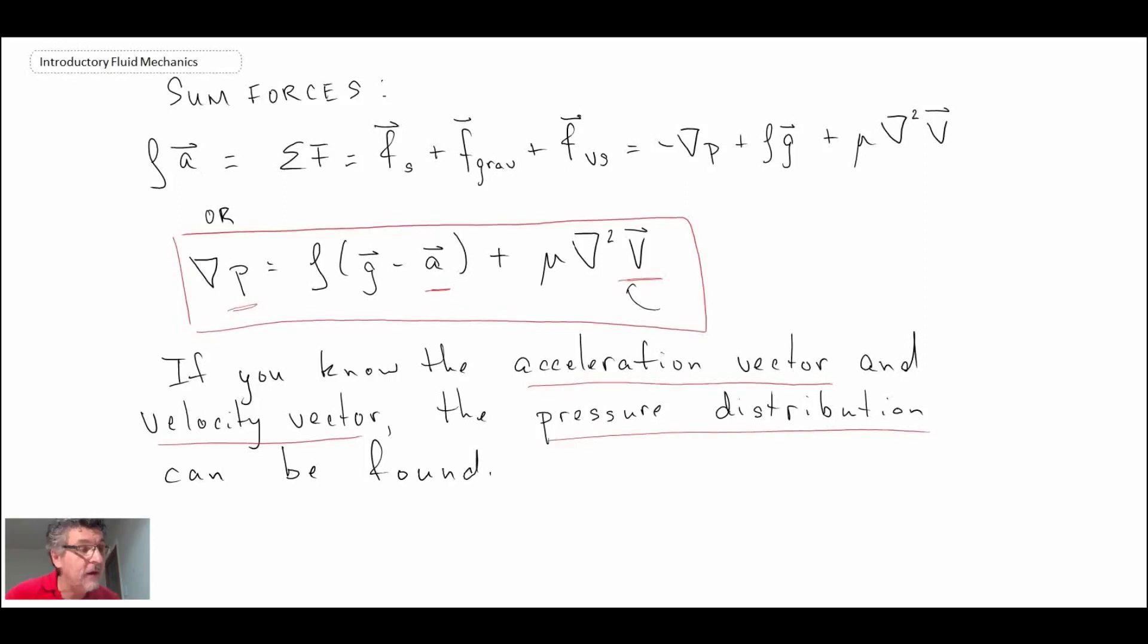We're now going to consider a number of special cases of this equation. And these are the ones that we typically use when we're dealing with hydrostatics. So special cases. The first one would be if the flow was at rest or constant velocity. So if the flow is at rest, the acceleration vector a is going to be zero. And del squared v is going to be equal to zero as well.